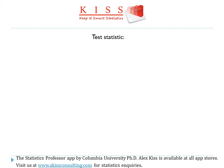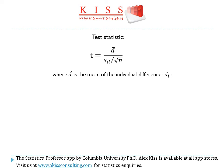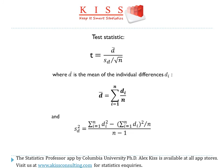The test statistic is t equals d-bar divided by sd over the square root of n. d-bar is the mean of the differences for each individual, di. The variance of the differences is given by the formula shown here, and we'll be taking the square root of that to get sd, which is the standard deviation of the differences.